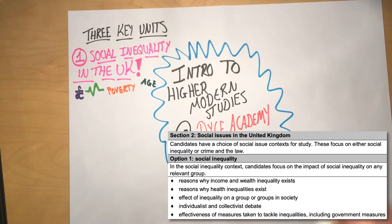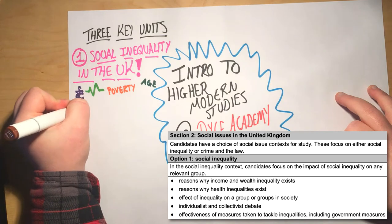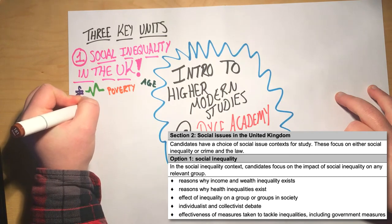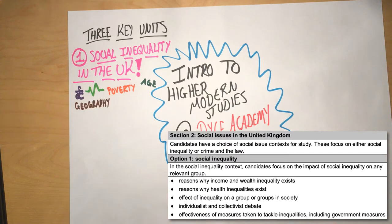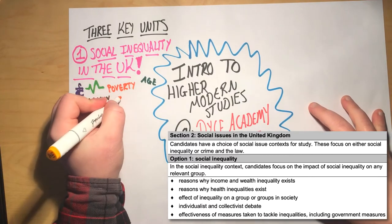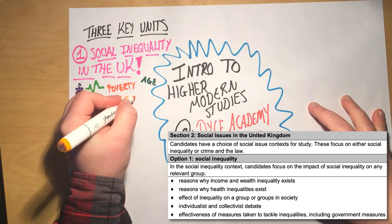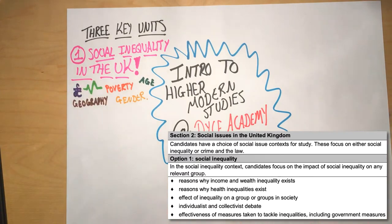So we look at those inequalities, then we look at what the government has been doing to try and address those inequalities. What have they tried to do to reduce this gap that exists between the wealthiest and the poorest in society, and the gap between the healthiest and the unhealthiest in society? How has the government responded? So we look at that.